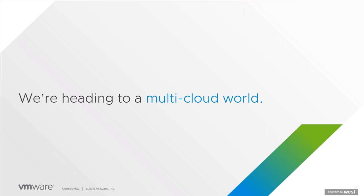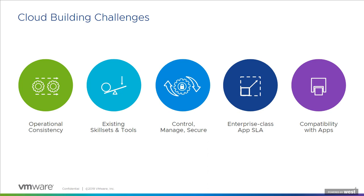We are headed to a multi-cloud world. When speaking to customers, they have a very clear cloud strategy in mind, and the preferred approach is hybrid cloud. Unlike the binary decision we had before — where a customer had to choose whether to keep workloads on-premises or migrate them to the public cloud — we can now seamlessly do both. We hear about common issues and challenges customers face when looking to migrate to the public cloud, the first being operational consistency.